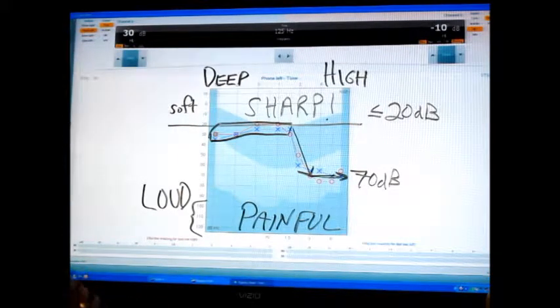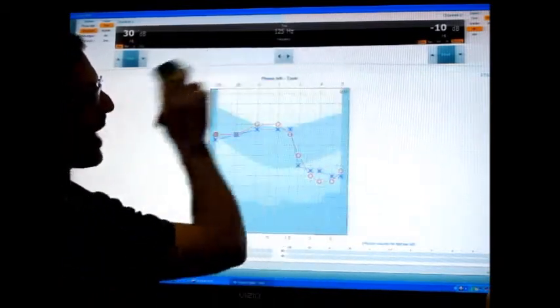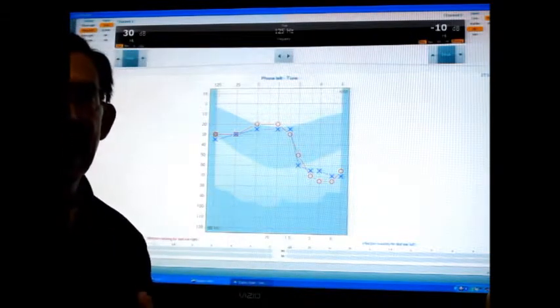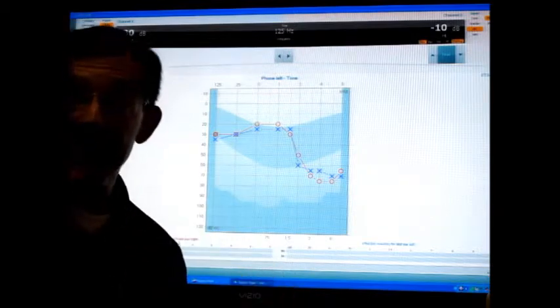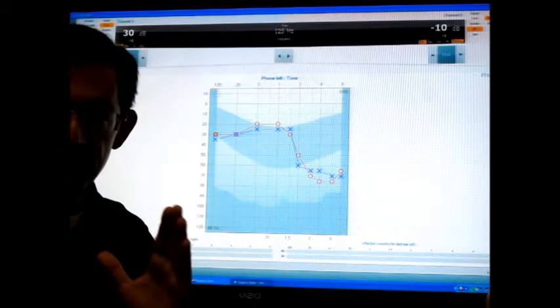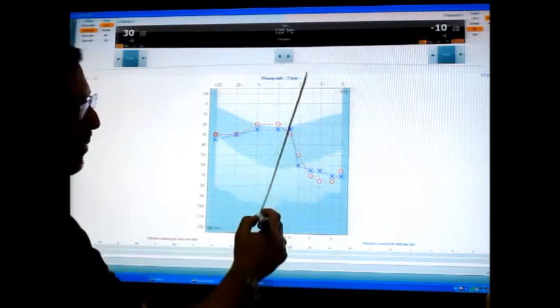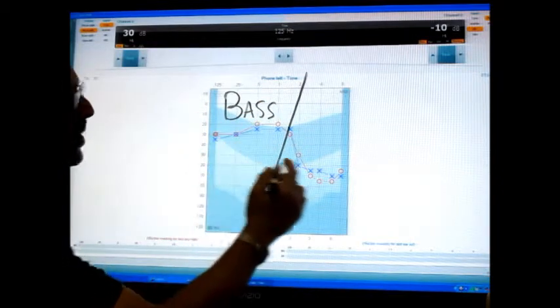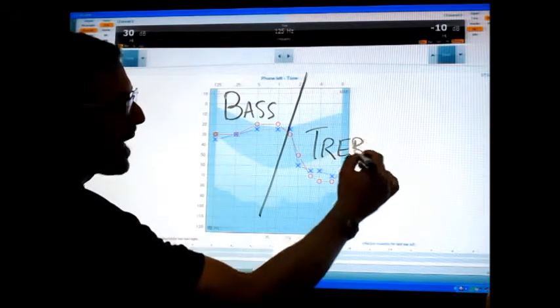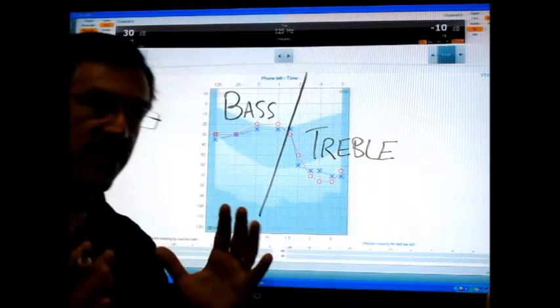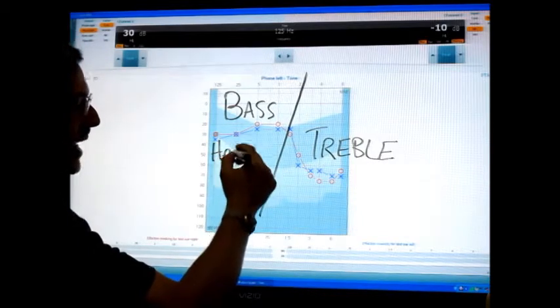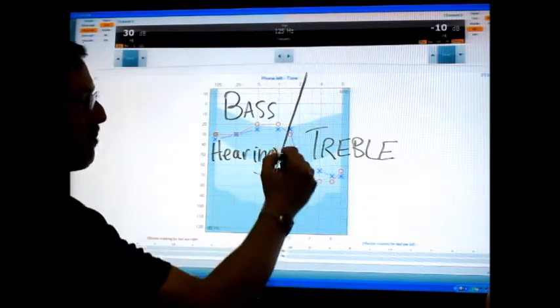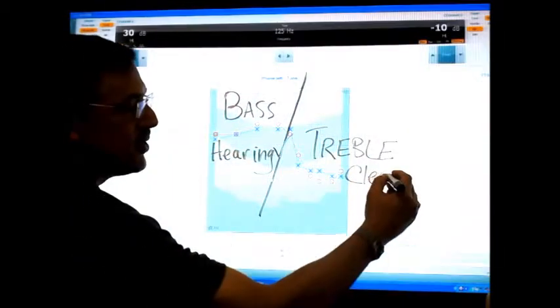Now let's talk a little bit about what that means with what you're hearing, how voices and sounds and clarity are being affected. I'm going to draw a line right down the middle here. These are the bass sounds over here to the left, the lower tones, and over here to the right are the treble sounds.